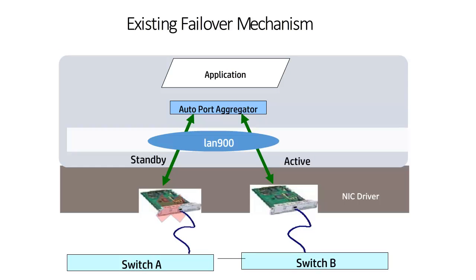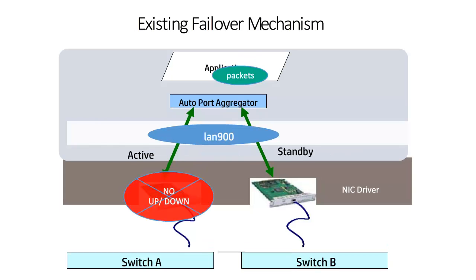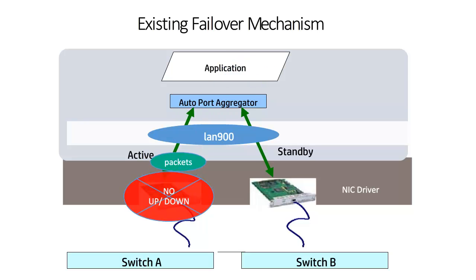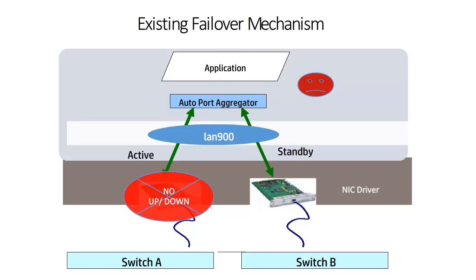Similarly, when the failed link in the Failover Group recovers, the underlying NIC driver will inform APA about its new link status, and APA performs the failback operation. However, in certain cases such as software, hardware, or firmware issues, the driver may fail to send such link failure notifications. In such cases, APA is not aware of the link failures and hence there will be no failover, which eventually results in loss of network connectivity.